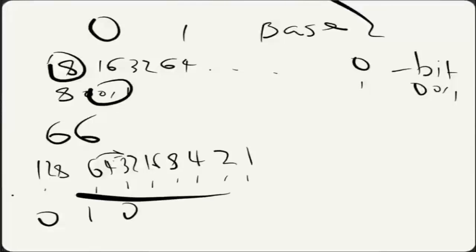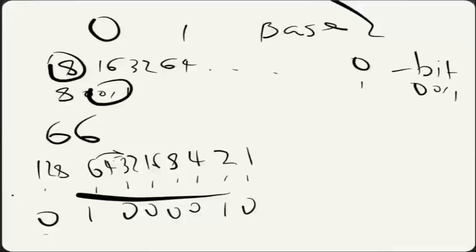Does 64 and 16 go into 66? No. Does 64 and 8 go into 66? No, it doesn't. Does 64 and 4 go into 66? No — 68 does not go into 66 — so we put a 0. Does 64 and 2 go into 66? Yes, it does, because it gets our number. And then we continue to the rightmost number, which is 1. Does 64 plus 2 plus 1, which is 67, go into 66? No, it doesn't. And we get our binary number: 0, 1, 0, 0, 0, 0, 1, 0. That's our number.